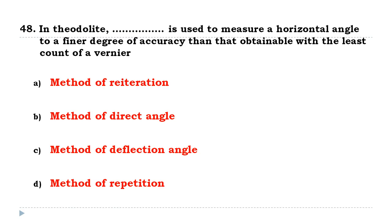In theodolite, the method of repetition is used to measure a horizontal angle to a finer degree of accuracy than that obtainable with the least count of the vernier.